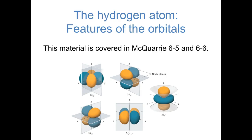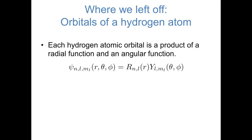Hi, everybody. In the previous video, we solved for the orbitals and the energies of a hydrogen atom. In this video, I'd like to take a closer look at some of the features of those orbitals, what they look like. First, let's remind ourselves of what the mathematical form of these orbitals is.